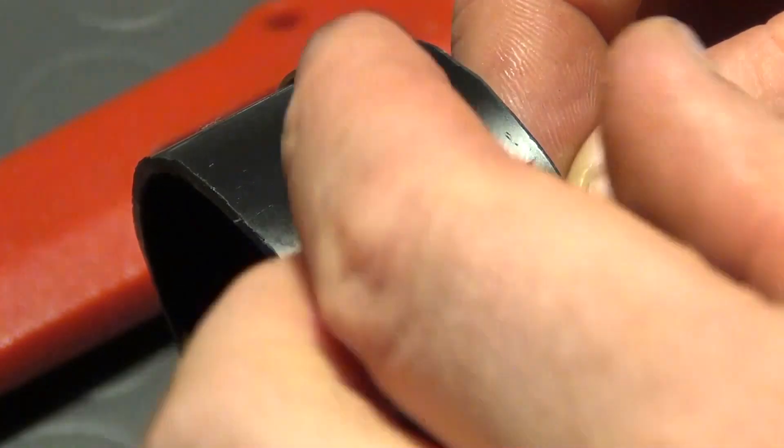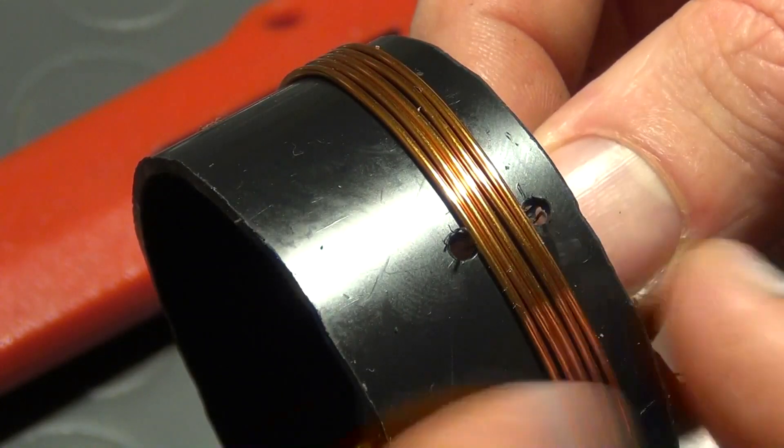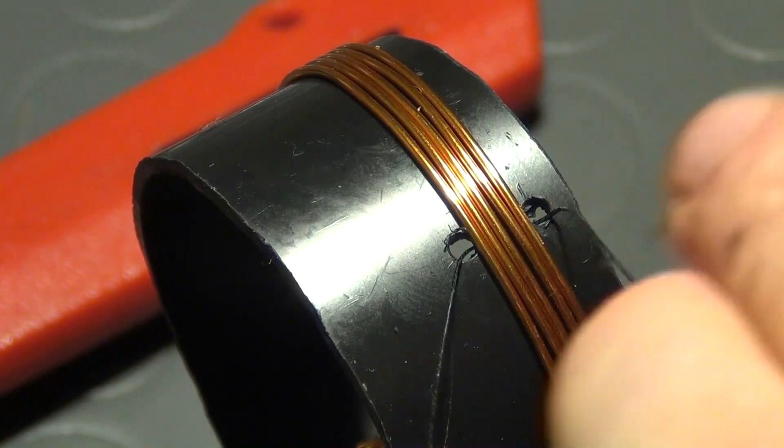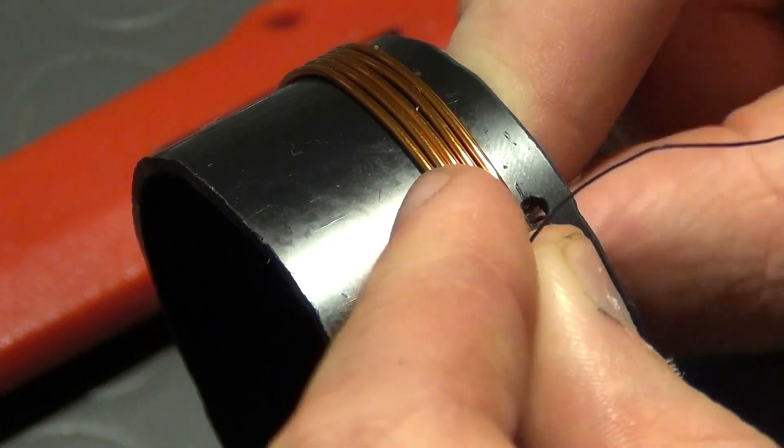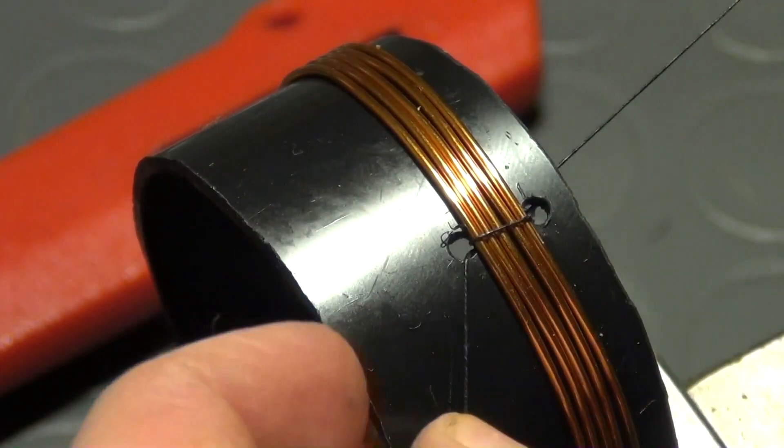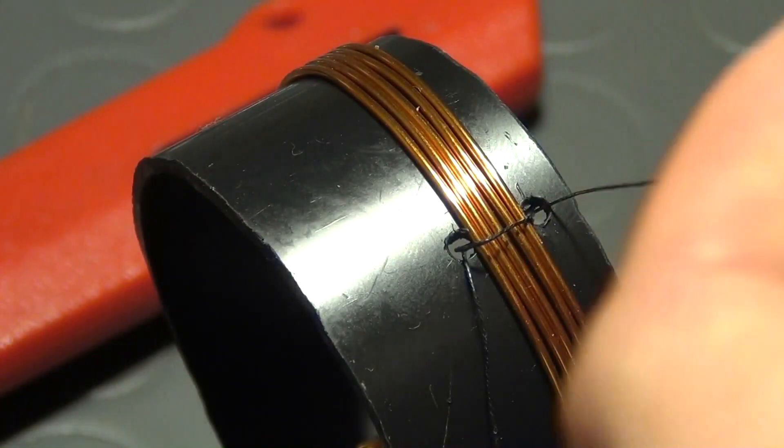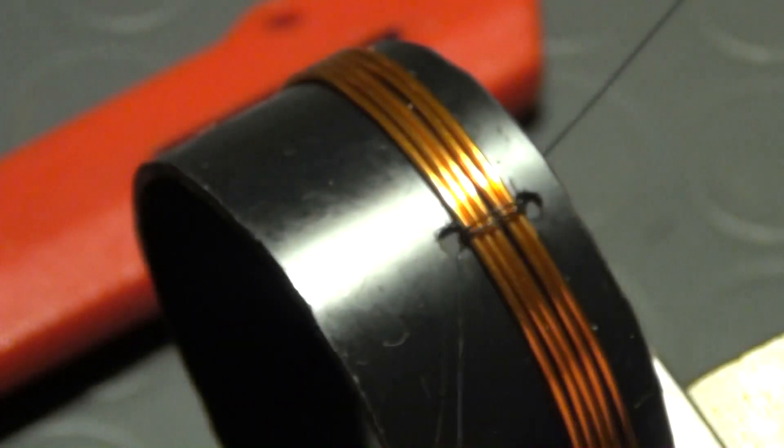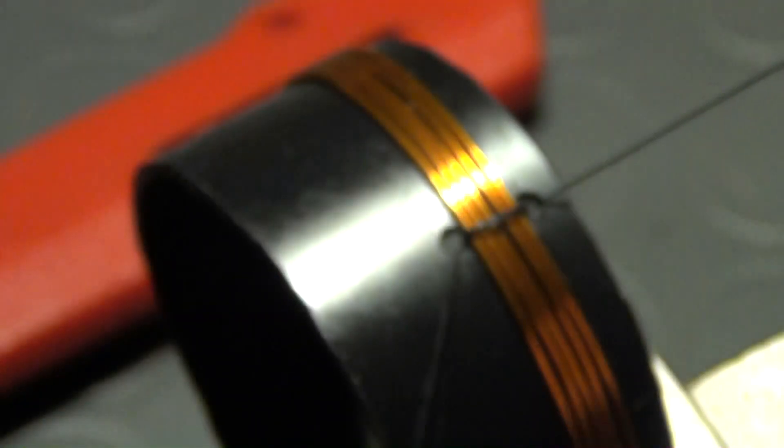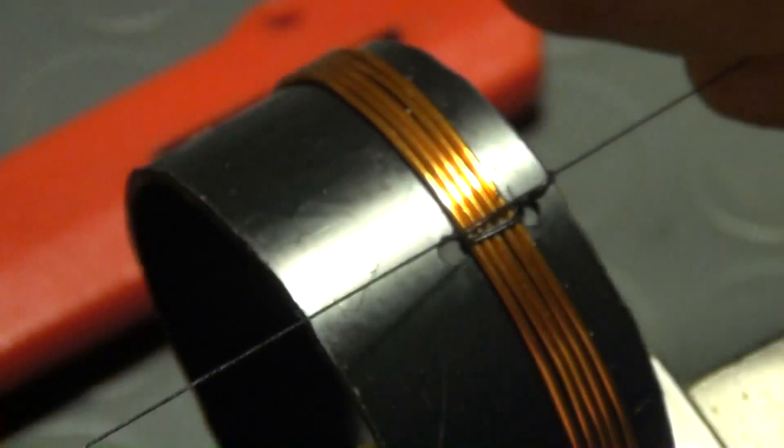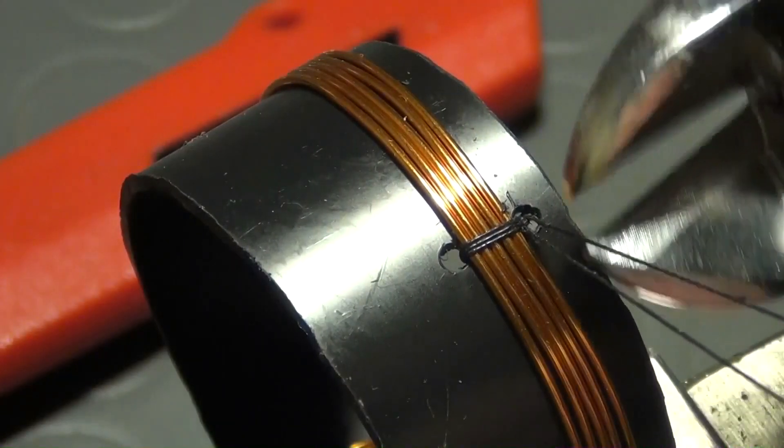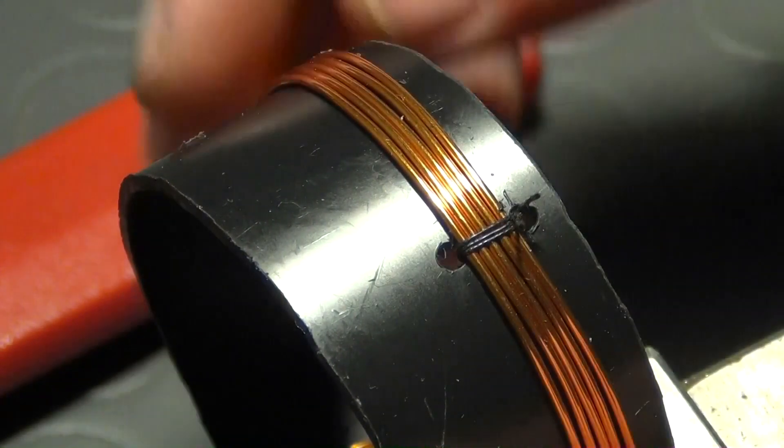A piece of string is then threaded through one of the holes and then wound around the winding so that several loops of string are created around the magnet wire turns. The string is pulled slightly so that the turns of the magnet wire are pushed together. After about three to four loops are made, the piece of string is then knotted at least two times, and finally the ends of the string are cut off with a side cutter.